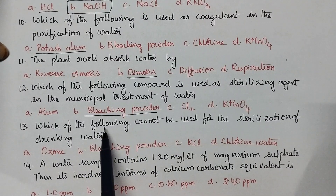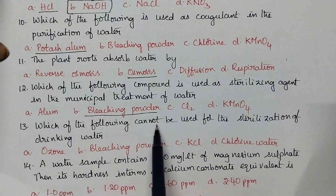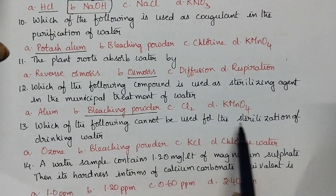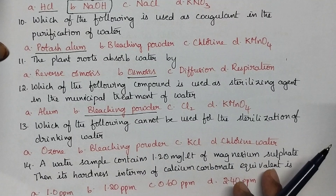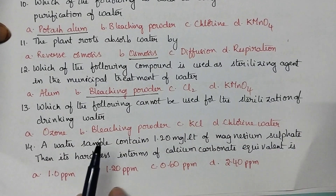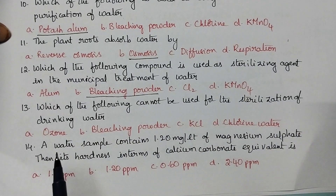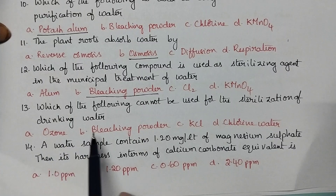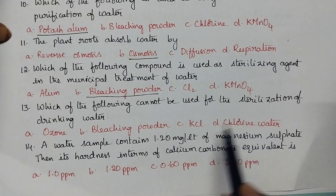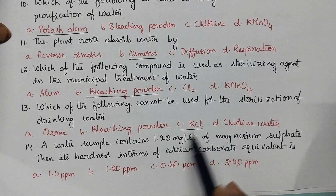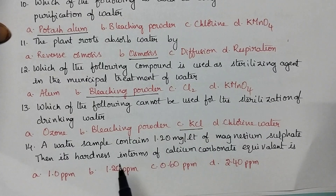Which of the following cannot be used for the sterilization of drinking water? Sterilization of drinking water can be done using ozone, bleaching powder, or chlorine water. Potassium chloride is not used for the sterilization of drinking water.